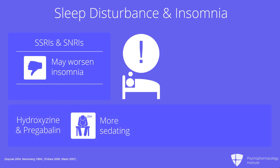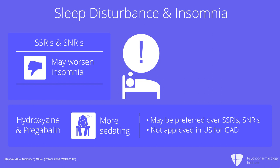These include drugs like hydroxyzine and pregabalin. I should point out that pregabalin is not approved in the U.S. for GAD, nor is hydroxyzine. But these might be preferred over SSRIs or SNRIs when there is prominent insomnia.